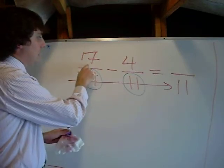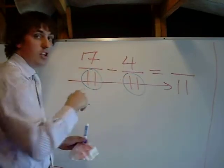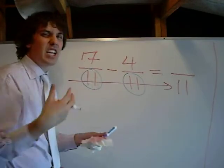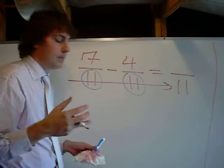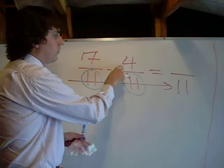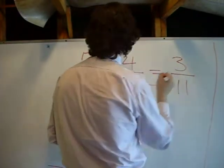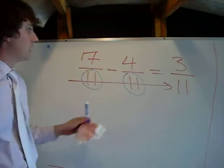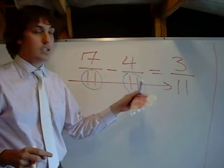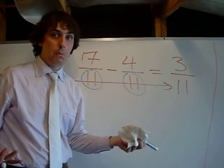Up top, we have 7 minus 4. The numerators, we just treat it like a normal addition or subtraction problem. So 7 minus 4 is 3. So, 7 elevenths minus 4 elevenths equals 3 elevenths. Pretty simple.